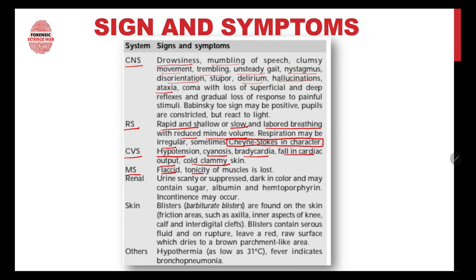Muscles can be flaccid with loss of tonicity. Urine can be scanty or suppressed, dark in color, and may contain sugar, albumin, hemoporphyrin; incontinence may occur. The skin may develop blisters — called barbiturate blisters — which contain serous fluid, and on rupture they leave a red raw surface that dries to a brown parchment-like area. Other symptoms can include hypothermia and fever.